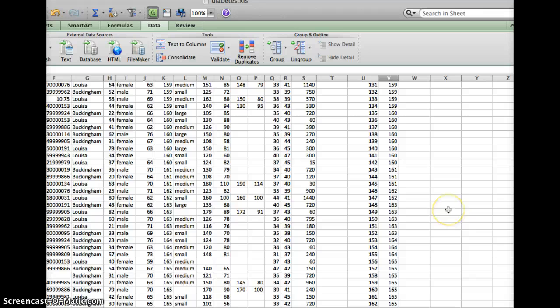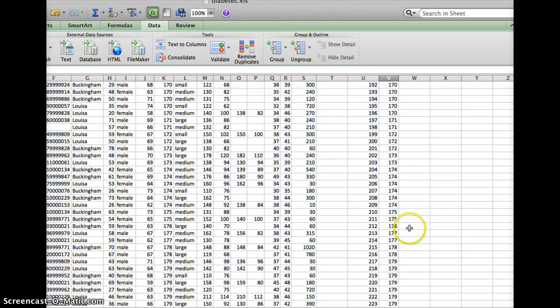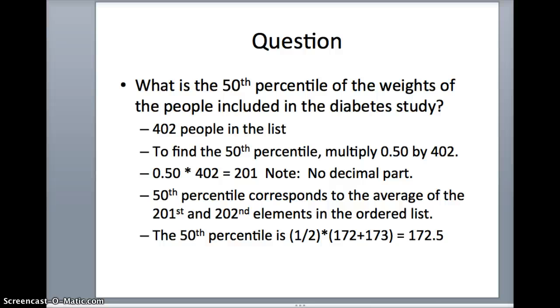Coming down the list, 201 and 202 are here. The 201st number was 172. The 202nd number was 173. If I'm going to average those together, 172 plus 173 divided by 2 will give me 172 and a half.